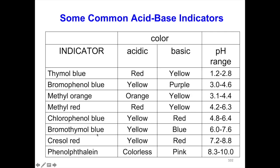Bromothymol blue is yellow in acidic and blue in basic, with a pH range of 6.0 to 7.6. The next indicator is yellow in acidic and red in basic, with a pH range of 7.2 to 8.8.